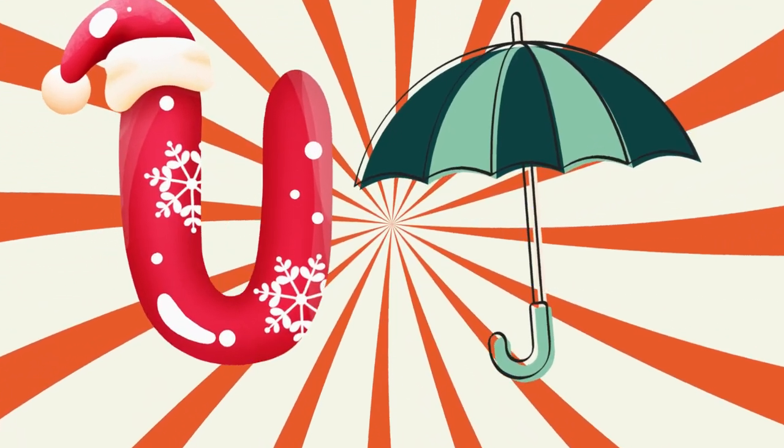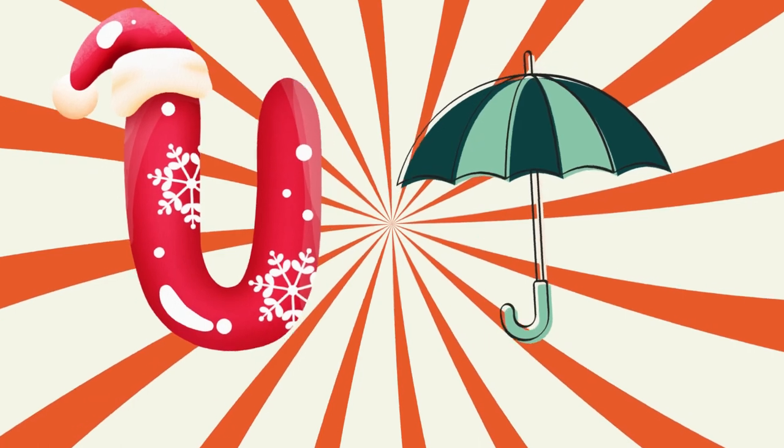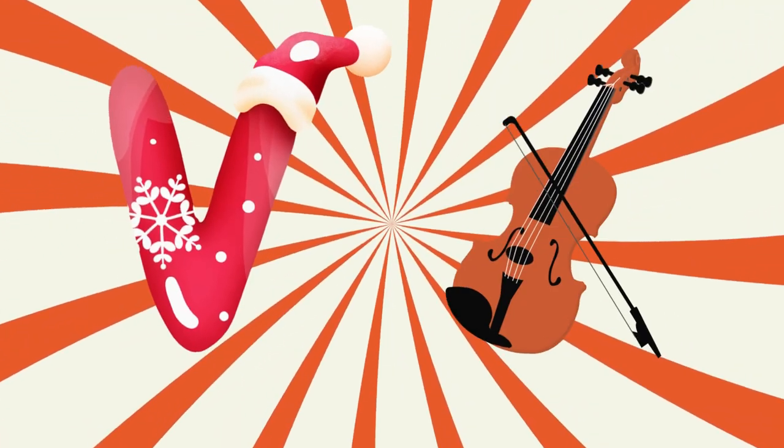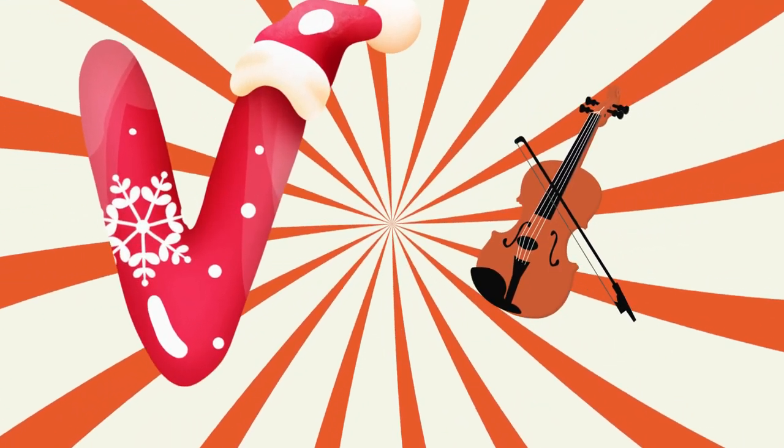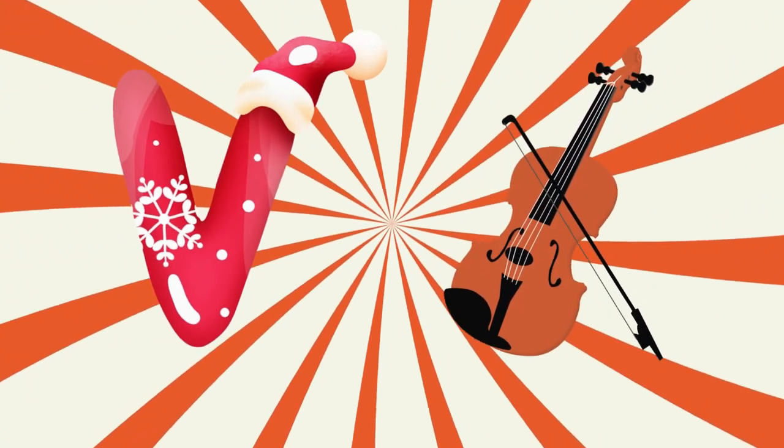U is for umbrella, u-u-umbrella. V is for violin, v-v-violin.